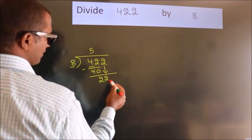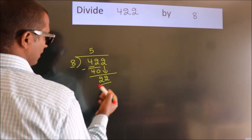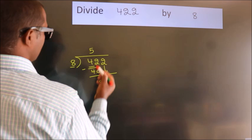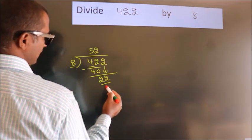So 2 down, so 22. A number close to 22 in the 8 table is 8 twos, 16.